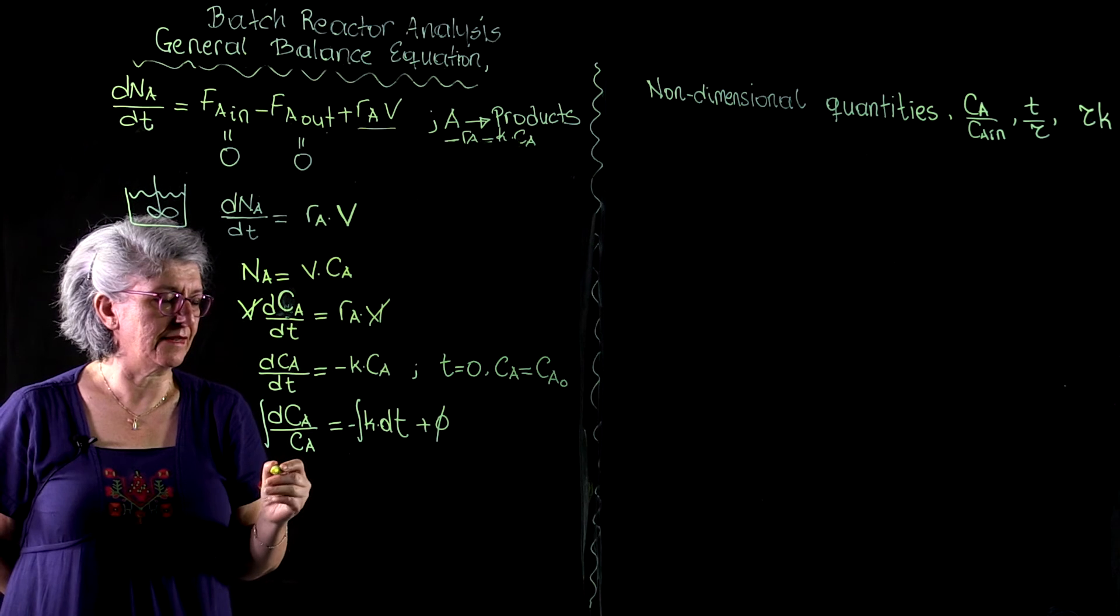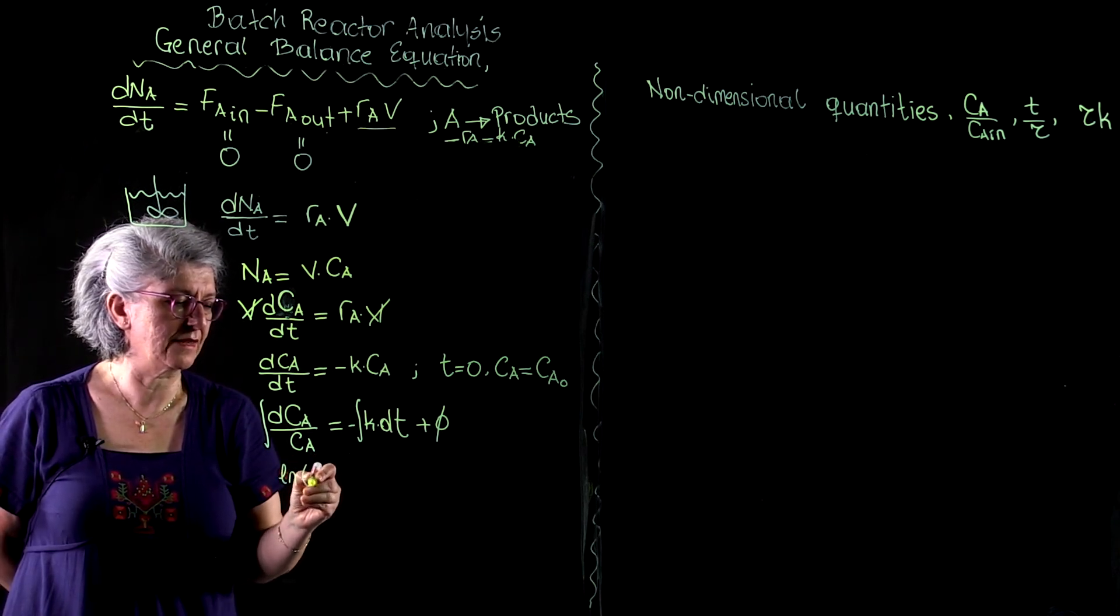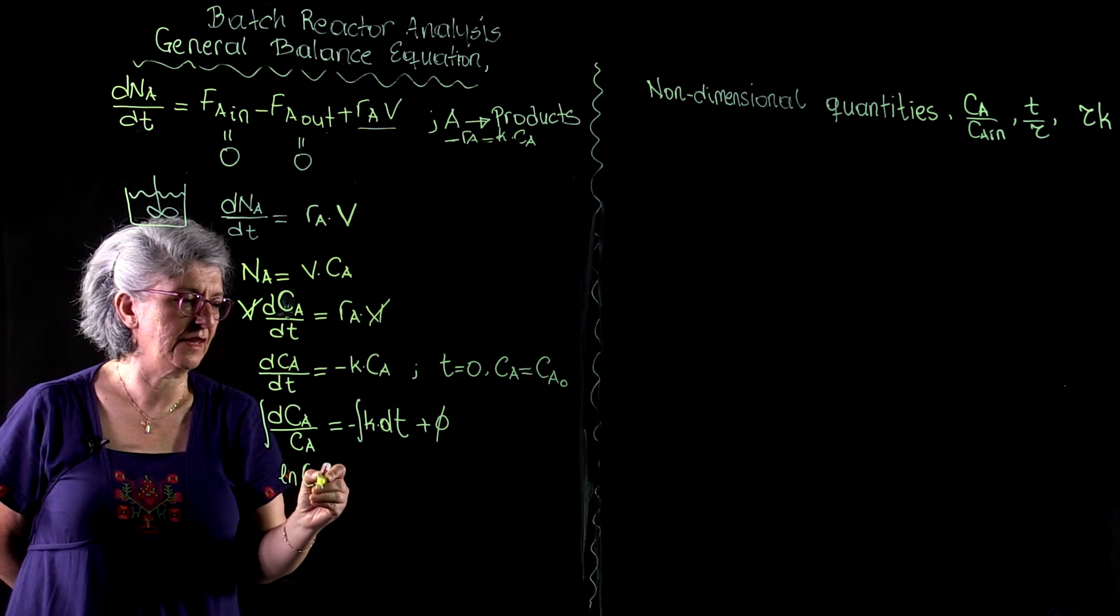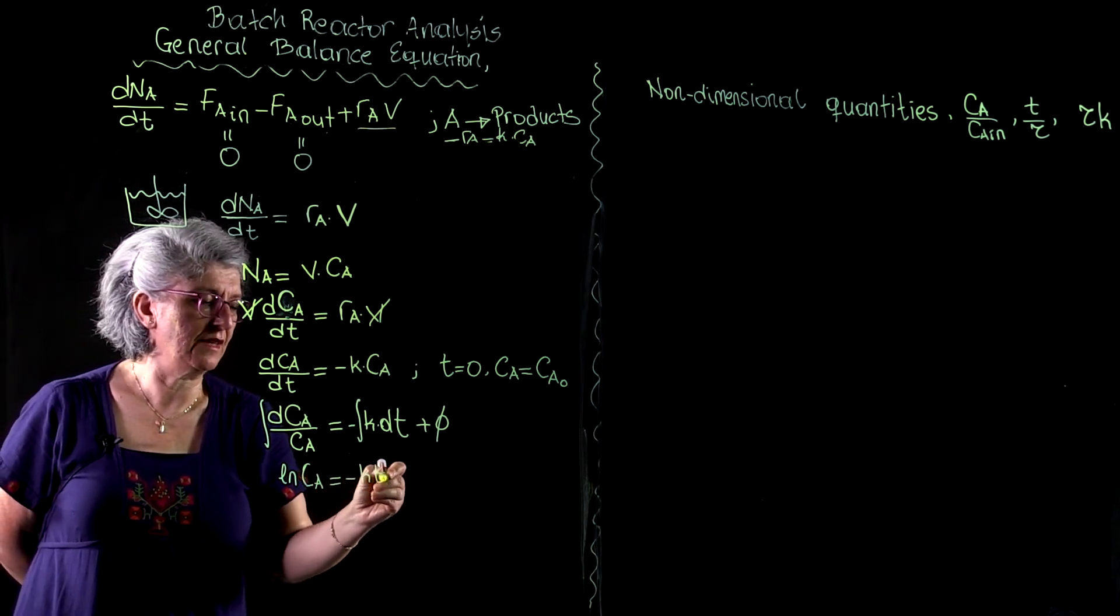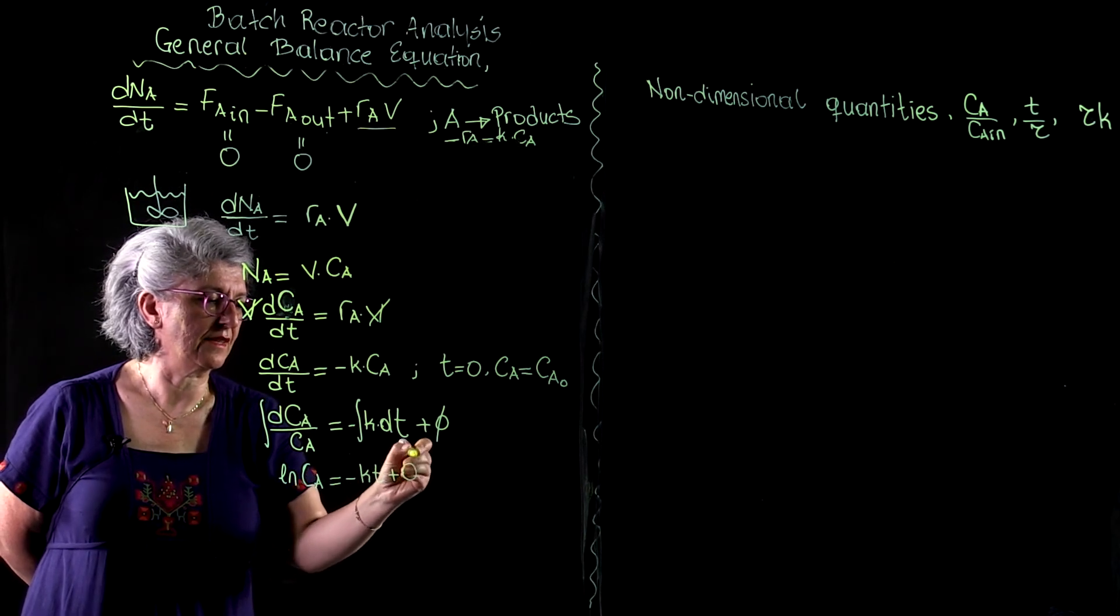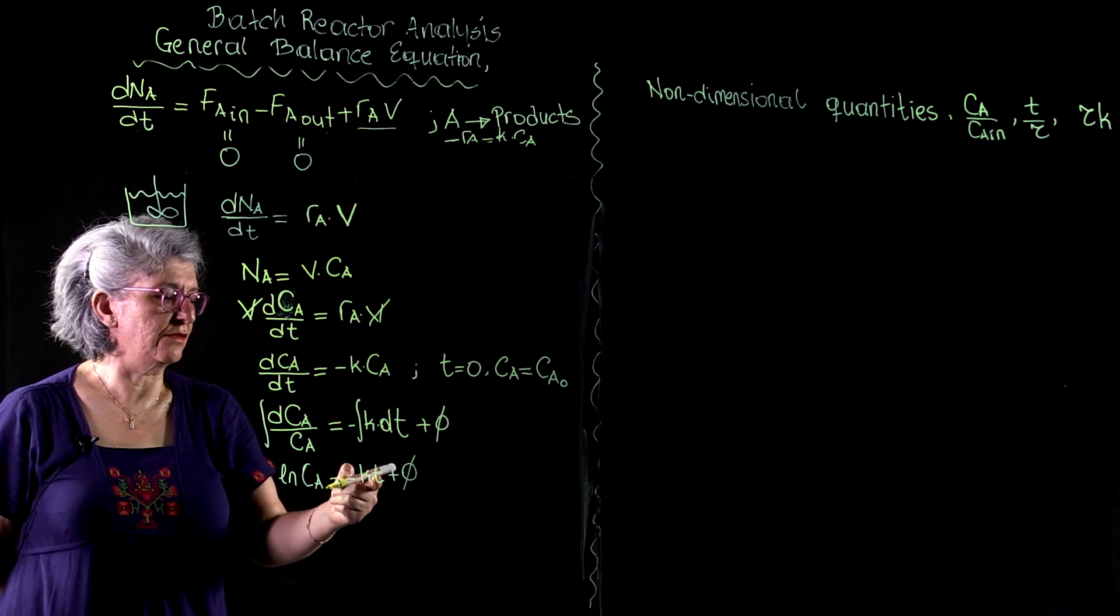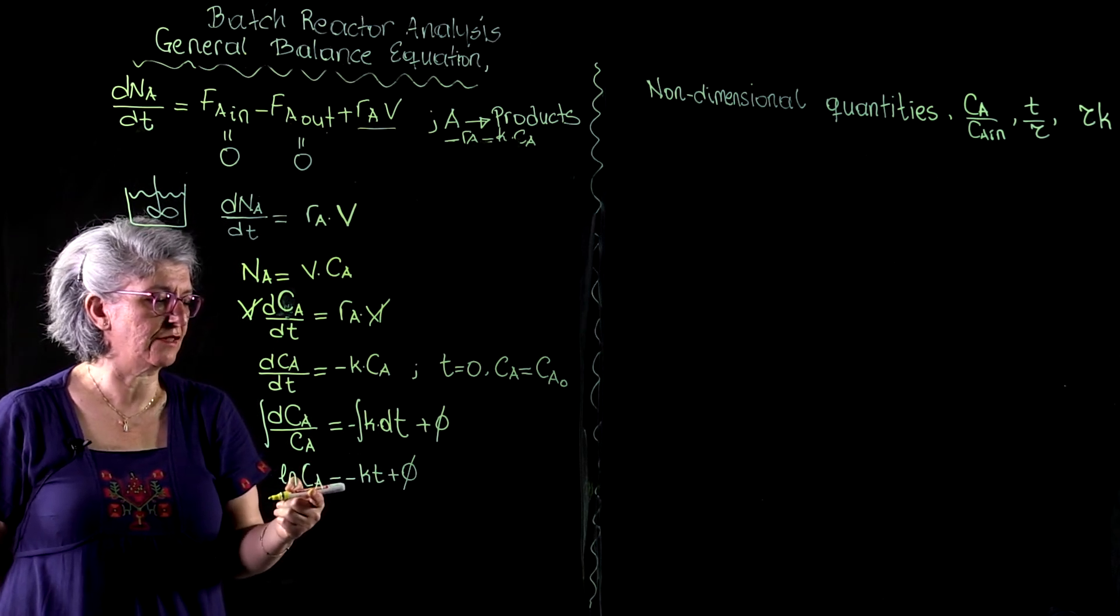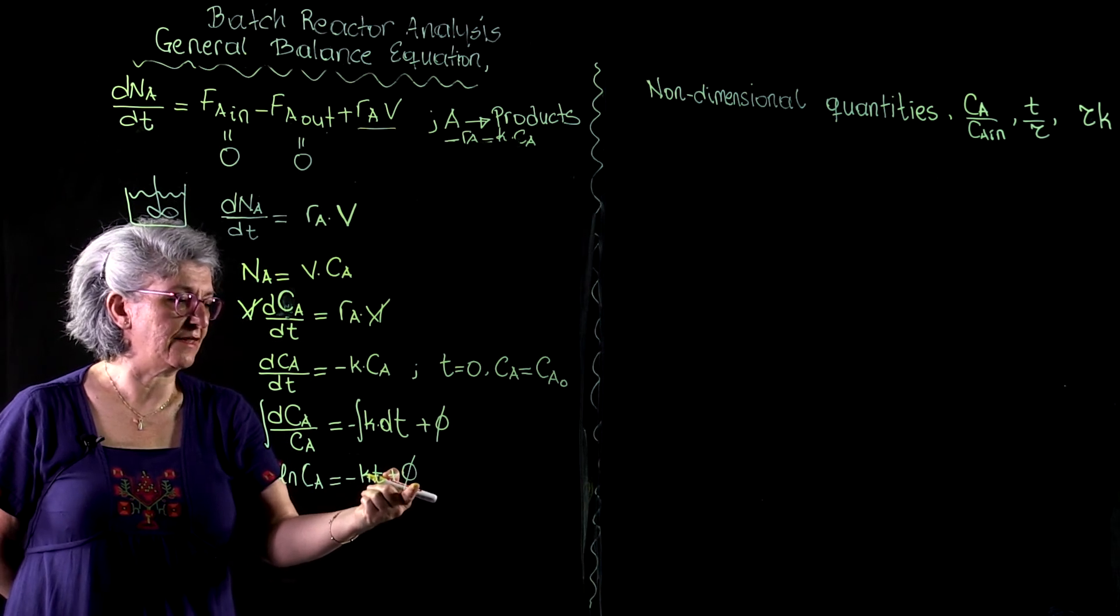And this integration yields ln of Ca equals minus K times t plus integration constant phi. At time t equals 0, Ca equals Ca0, so this phi becomes ln Ca0.